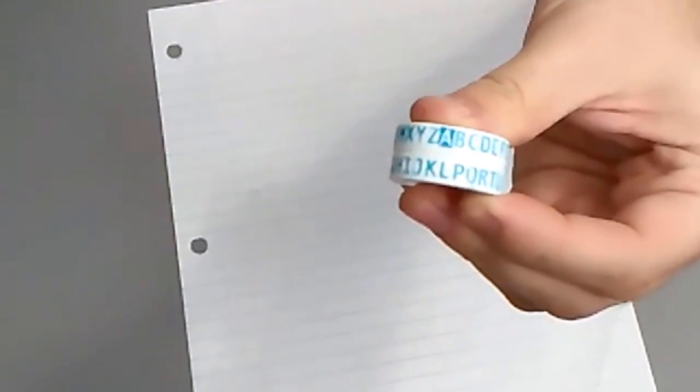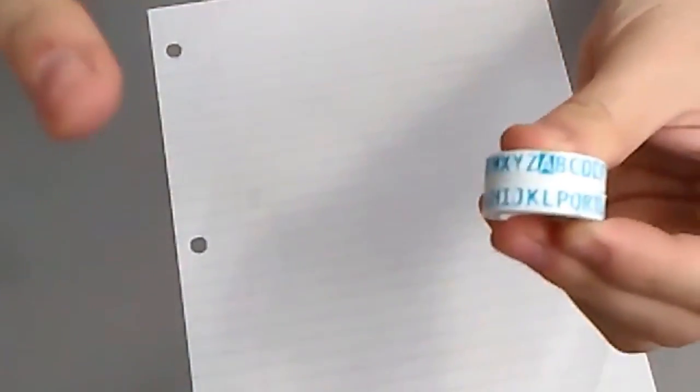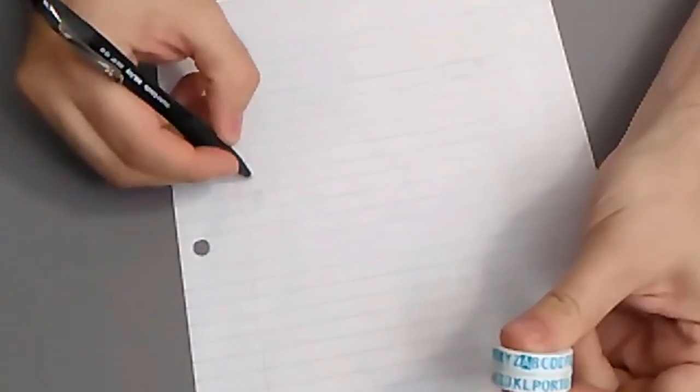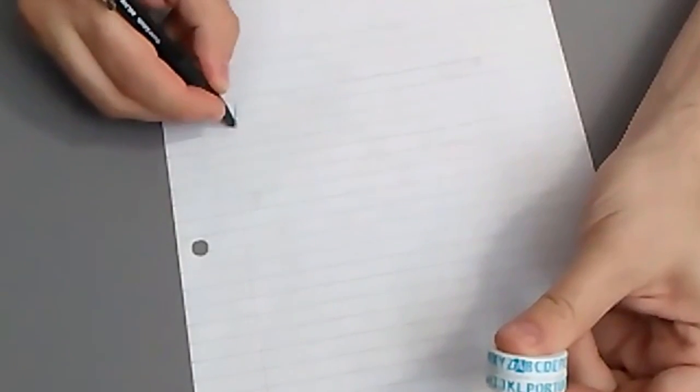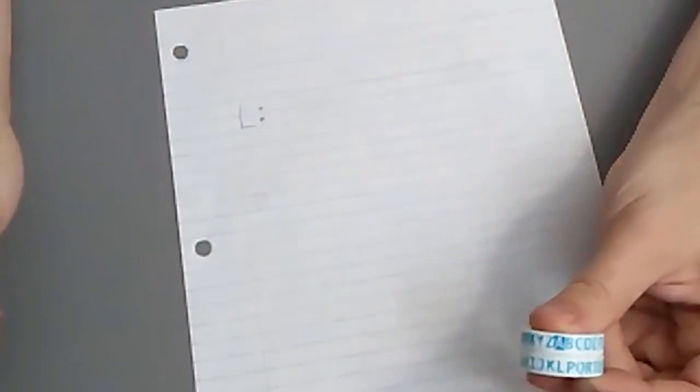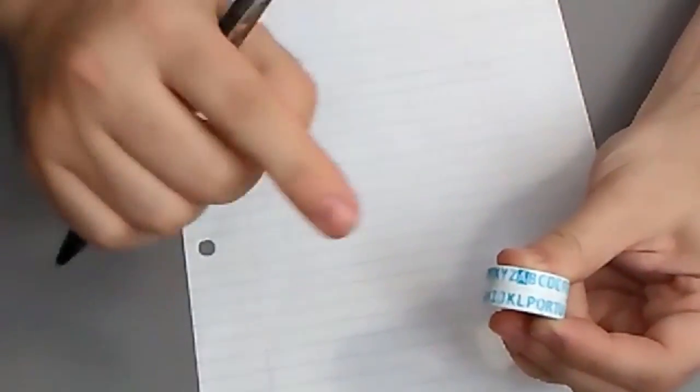So I'm going to choose L as my key. And in this method of encoding, I'm going to simply write L as the first letter of my message, like that. And then, in order to encode, you start at the top ring.